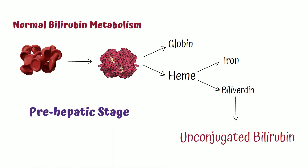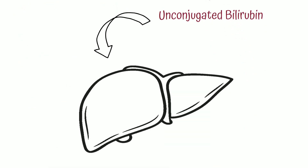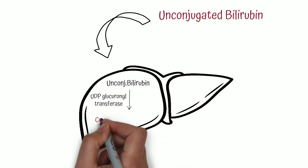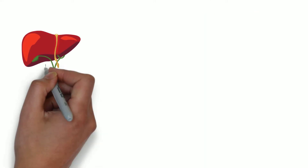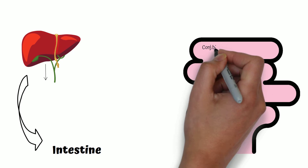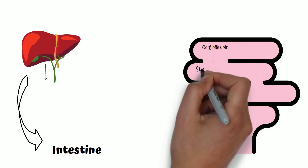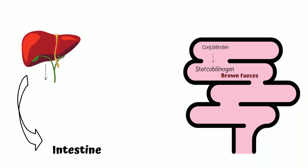Unconjugated bilirubin is water insoluble. It goes into the liver where it is conjugated by UDP-glucuronosyltransferase to form conjugated bilirubin, which is water soluble. This conjugated bilirubin passes through the common hepatic duct and common bile duct into the intestine, where it is converted to stercobilinogen by gut bacteria. Stercobilinogen gives the brown color to our feces.